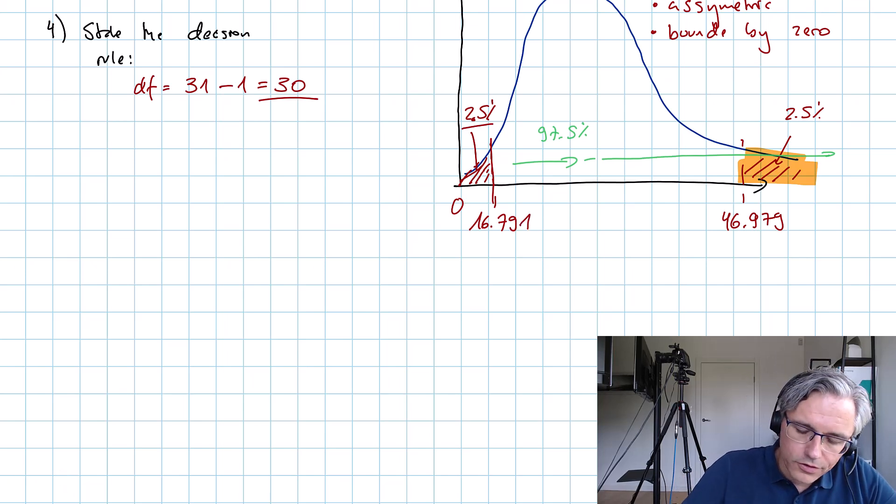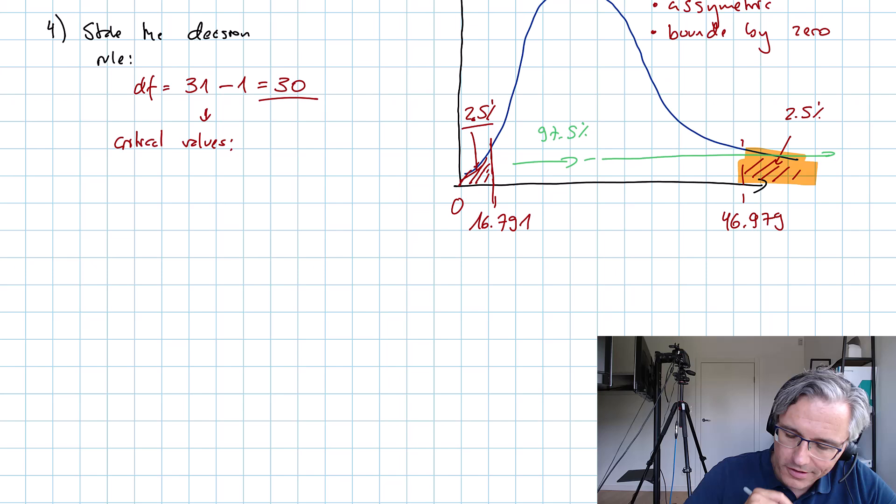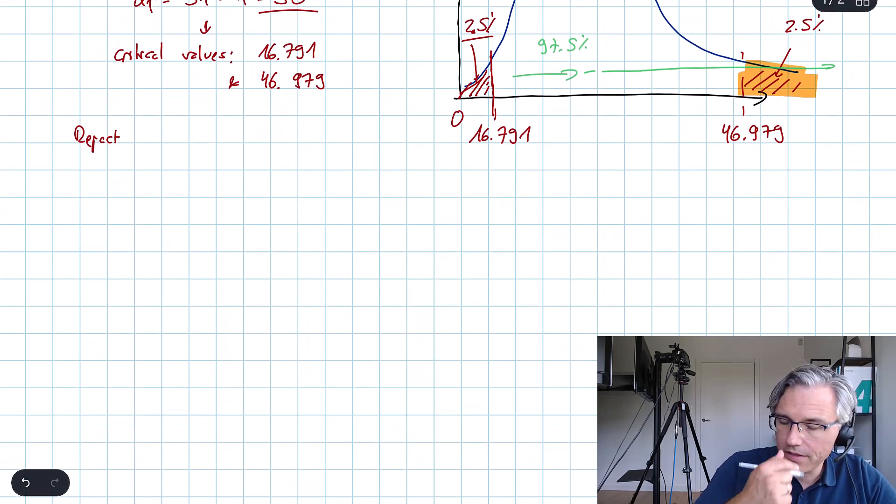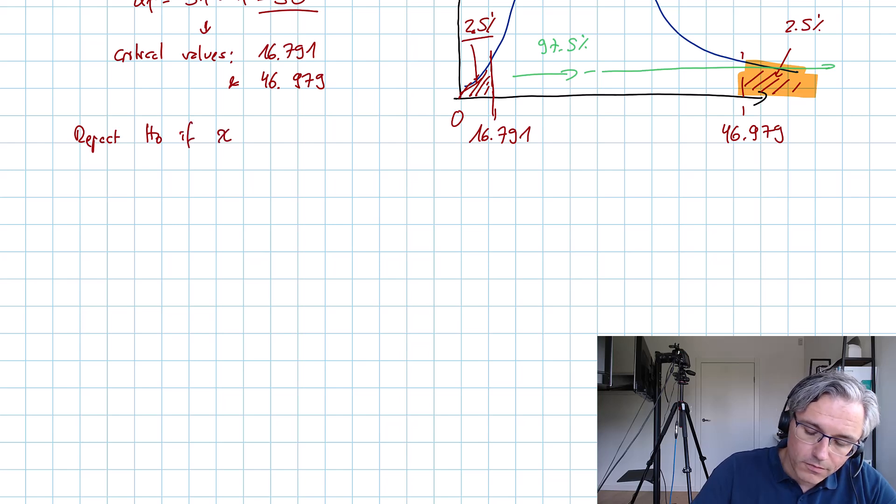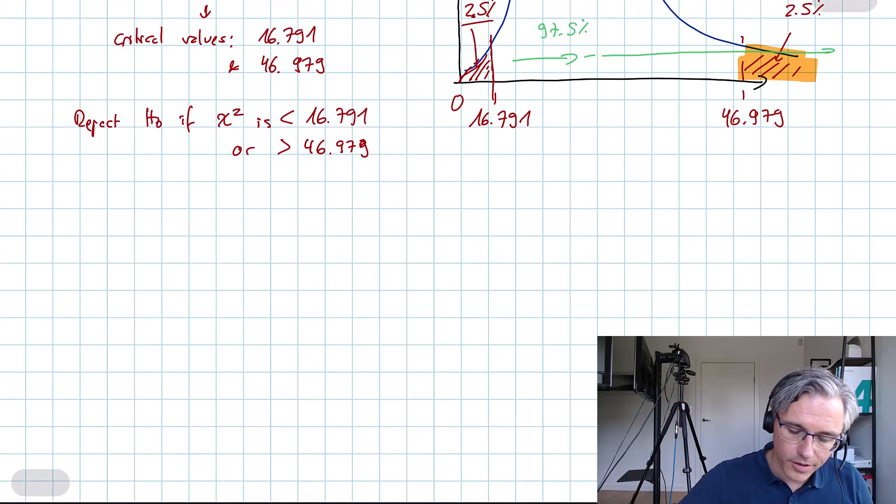We've got critical values which are not the same in terms of absolute number. They're very different, both are positive: 16.791 and 46.979. Our decision rule is going to be reject the null hypothesis if our computed chi-squared value, the test statistic, is either below 16.791 or above 46.979.